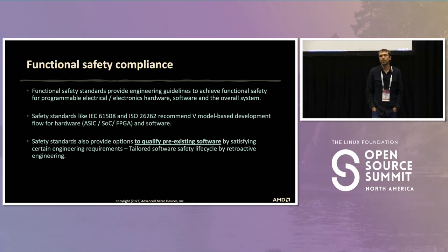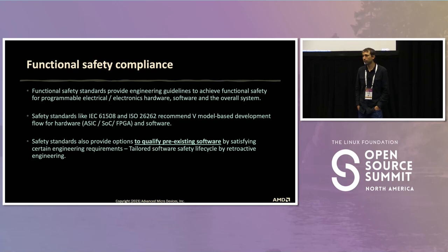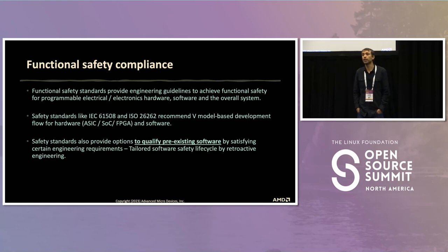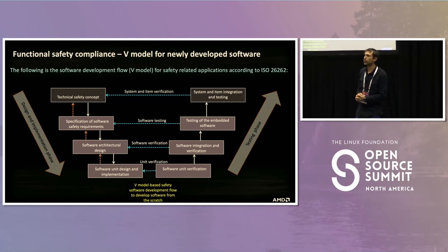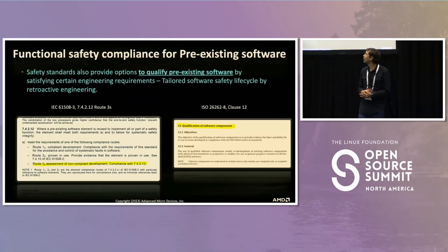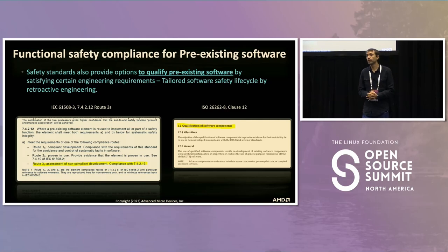We'll discuss two things. The safety standards cover the development practices to write software from scratch that is safe. In particular, they encourage what has been referred to many times as the V-model. There are also ways to qualify pre-existing software — software that has been written following different coding practices. The famous V-model has been encouraged to write new safe software, but it's not the only way. We're going to focus today on demonstrating and proving that software not developed using the V-model is still safe.